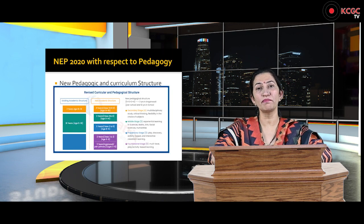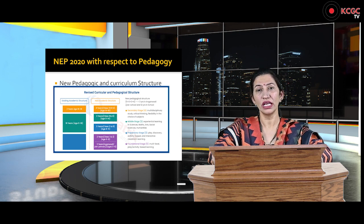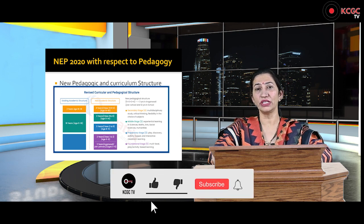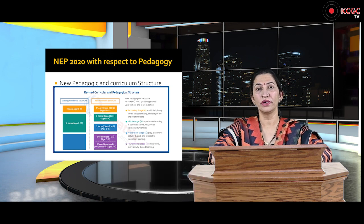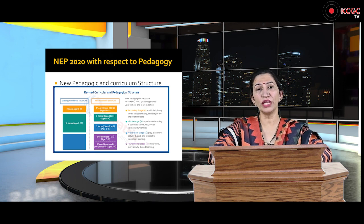Earlier we had the ten-plus-two structure, meaning children spent ages six to sixteen in school and seventeen to eighteen in junior college. But now this structure has been reframed. The new structure is five plus three plus three plus four, and education now starts from the age of three.